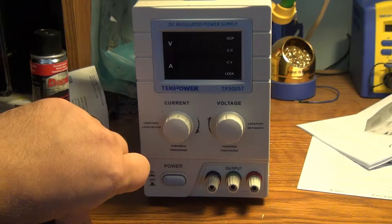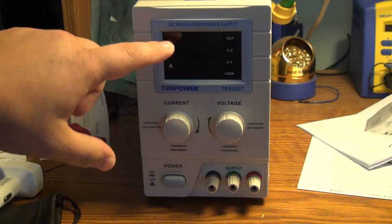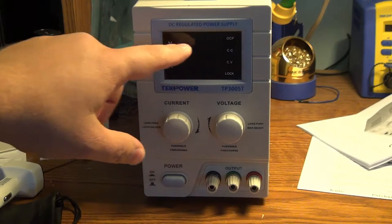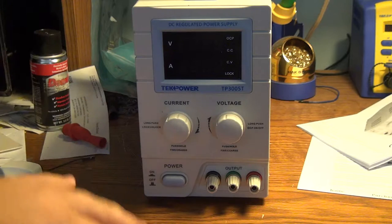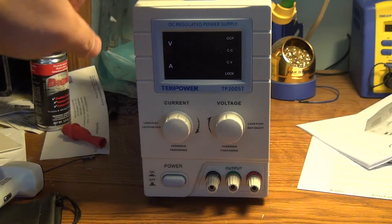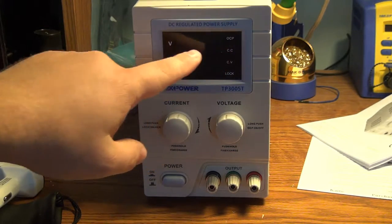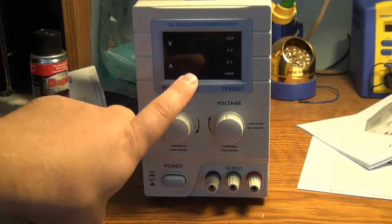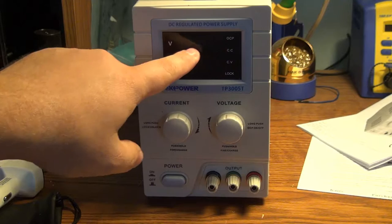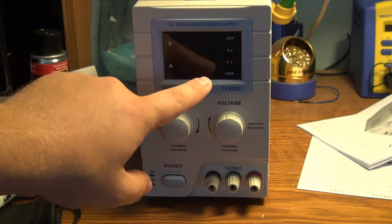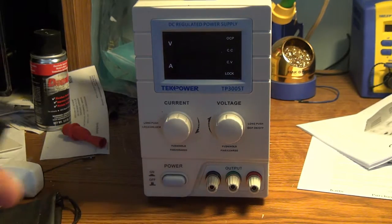Something that's commonly annoying about those kinds of supplies is when you do power them off, the voltage will reset to zero and the current will reset to the highest level. With this supply, it actually has non-volatile memory inside, which will store your last setting. Last time before I undid the cord, I set the supply to five volts and a half an amp. So let's plug in the supply, power it up and see what we get.